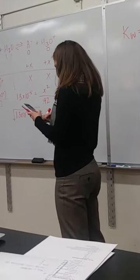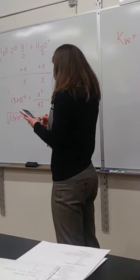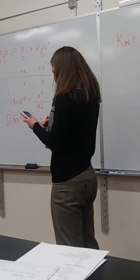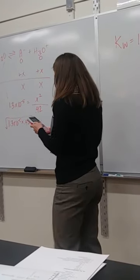So I got 1.3 times 10 to the minus 5 times 0.42. I take the square root of that and I get...